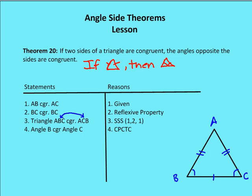We're given that AB is congruent to AC, and the diagram is marked accordingly. We know that BC is congruent to itself. So I can say triangle ABC is congruent to triangle ACB — it's the same triangle viewed in a different orientation and ordering of letters to represent that different orientation, by side-side-side.